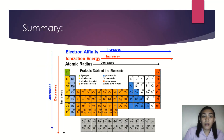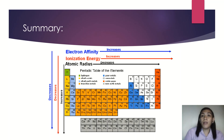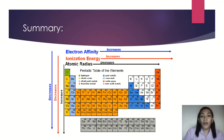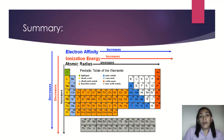Here is a summary image of the different properties. Electron affinity, ionization energy, and electronegativity all increase from left to right — going from group 1 to group 8. For atomic radius, it actually decreases from left to right. Meanwhile, electron affinity, ionization energy, and electronegativity decrease as you go down the periodic table, while atomic radius has an increasing trend from top to bottom.